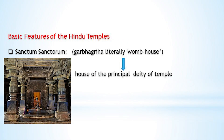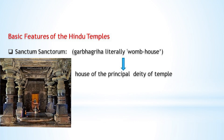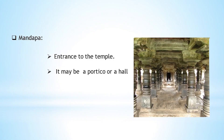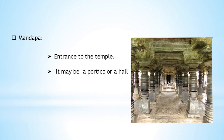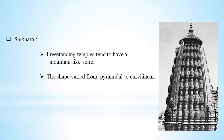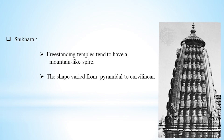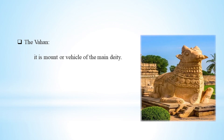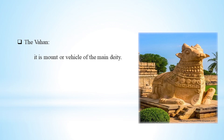We will see each feature one by one. The sanctum sanctorum is simply known as Garbhagriha, which houses the main deity of the temple. Next is the Mandapa, the entrance of the main temple, which may be a portico or hall type. The Shikara is the mountain-like spire whose shape differs from pyramidal to curvilinear. The Vahana is the vehicle of the main deity — for example, the bull is the vehicle of Lord Shiva.